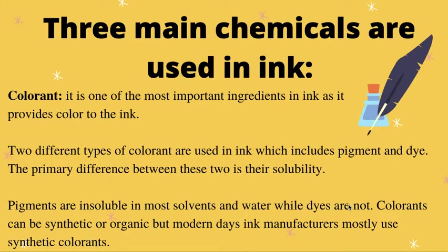There are three main chemicals used in ink. The first one is colorant — from the name itself, it's clear it provides color to the ink. We use different colored inks like black, blue, pink, and yellow depending on use and requirement. Two different types of colorants are used: pigment and dye. The major difference between pigment and dye as colorants is solubility — pigments are insoluble in most solvents and water, while dyes are soluble. Colorants can be either synthetic or organic, but nowadays most companies use synthetic colorants manufactured in the lab.